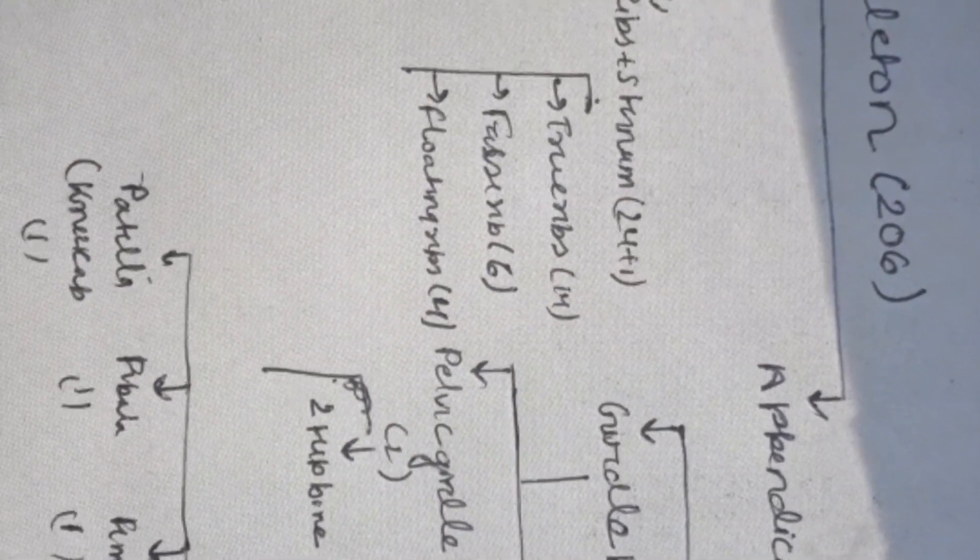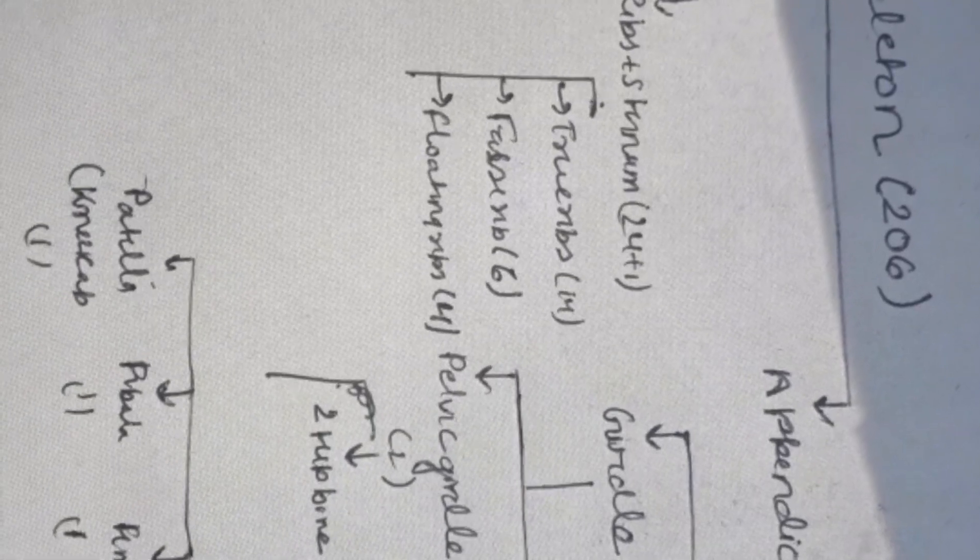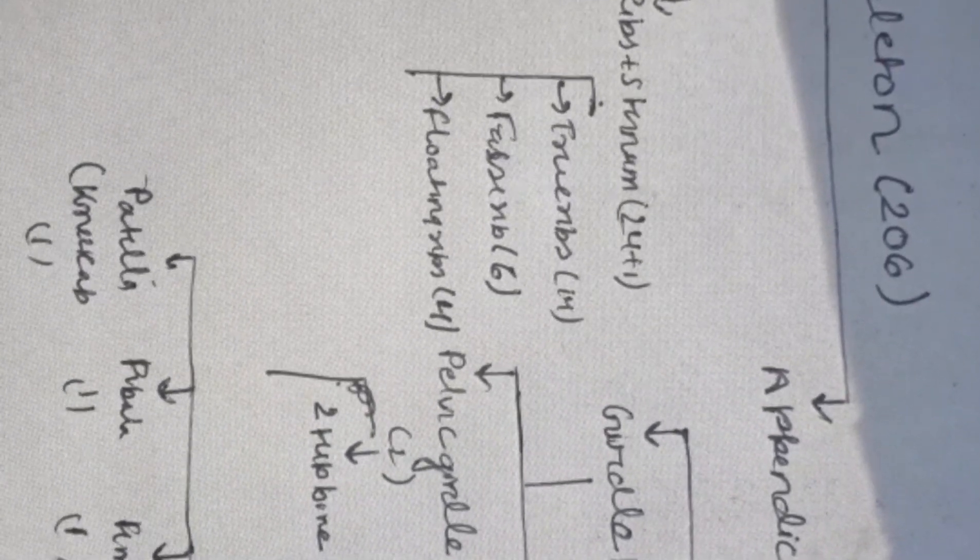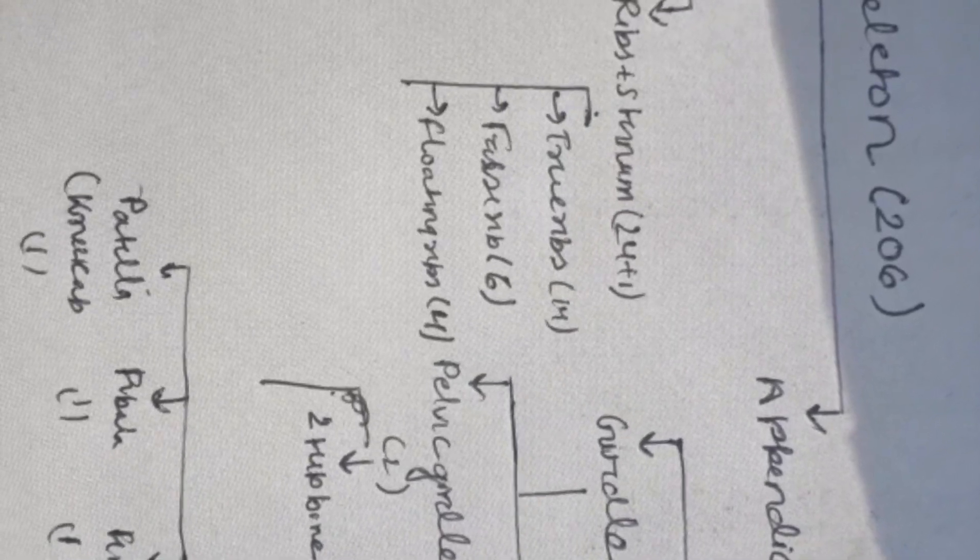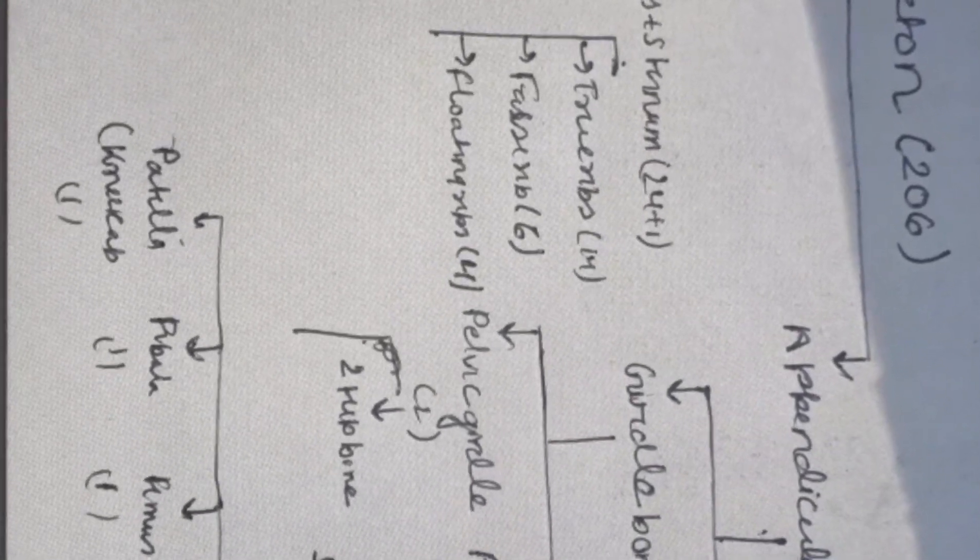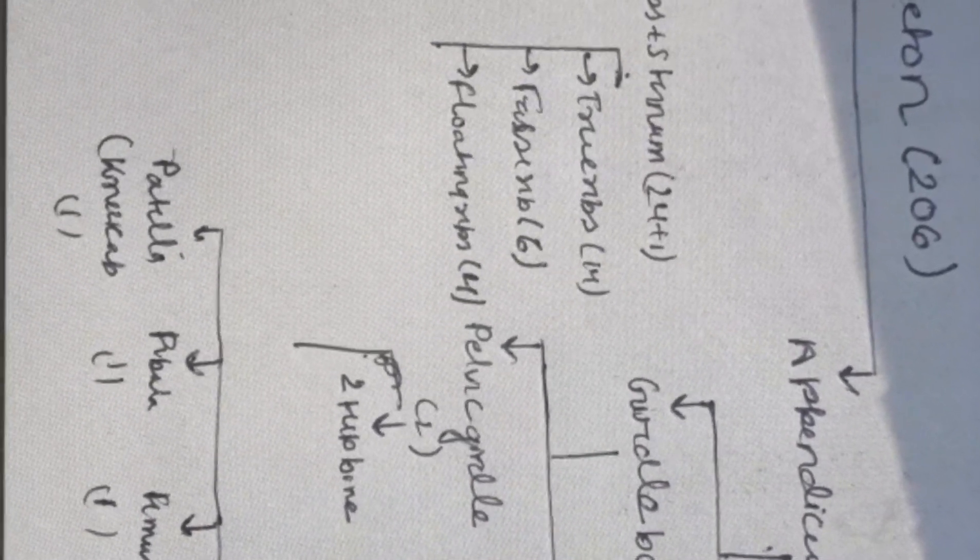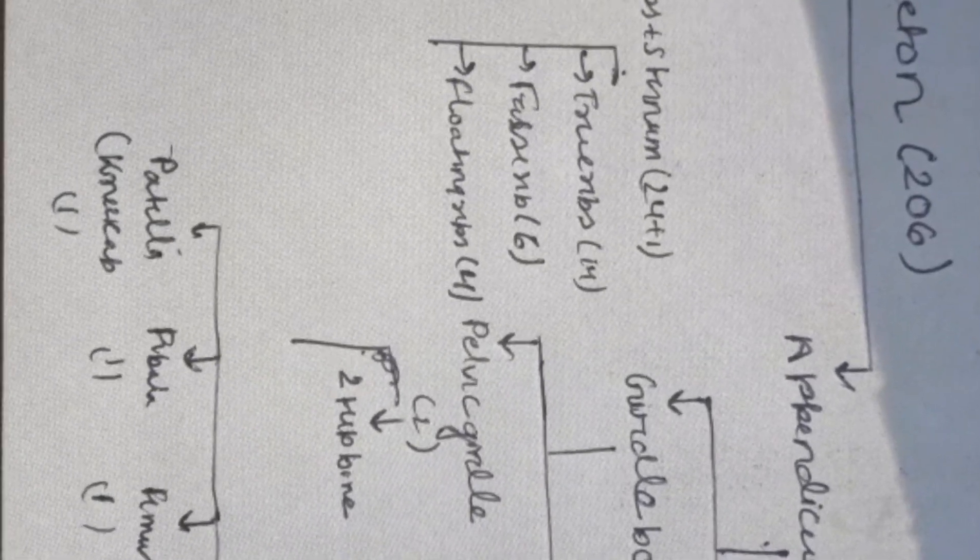Then we have metacarpal, which is five in number, then we have phalanges, which are fourteen in number because our little finger also consists of two phalanges. Coming to leg, we have the longest bone, femur, then tibia and fibula.